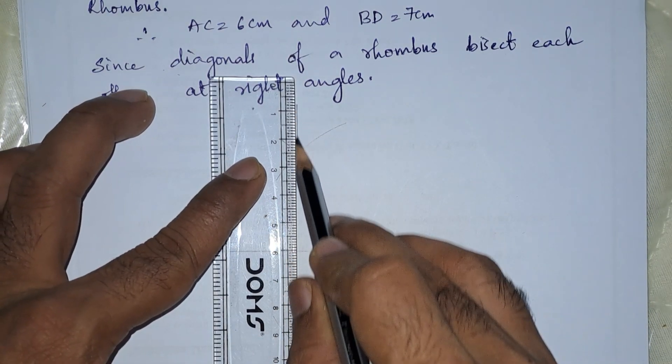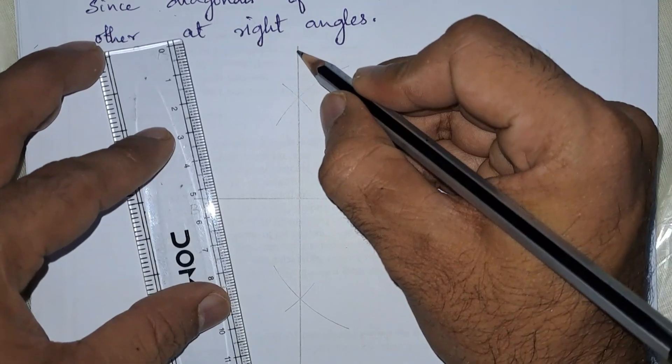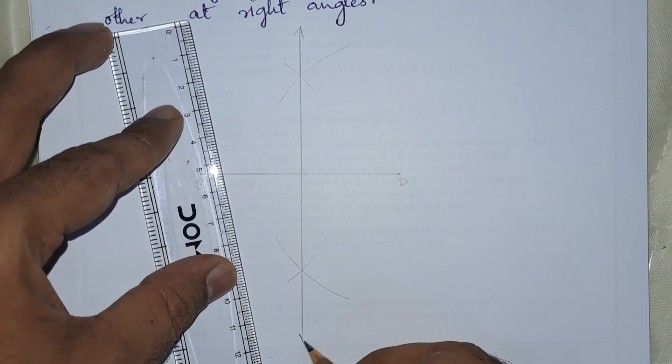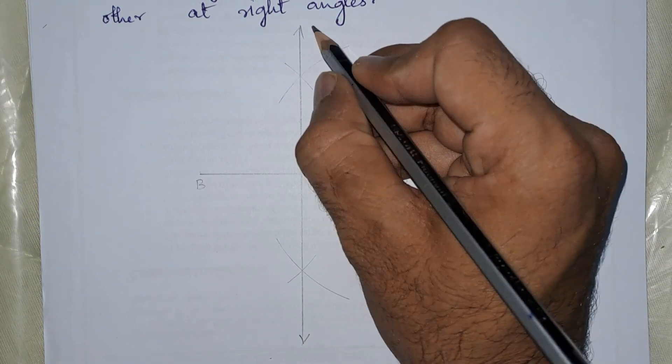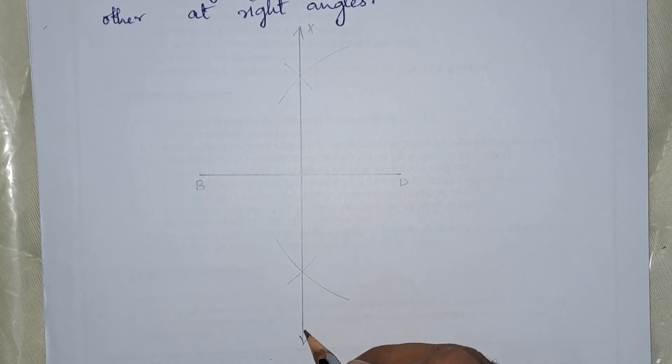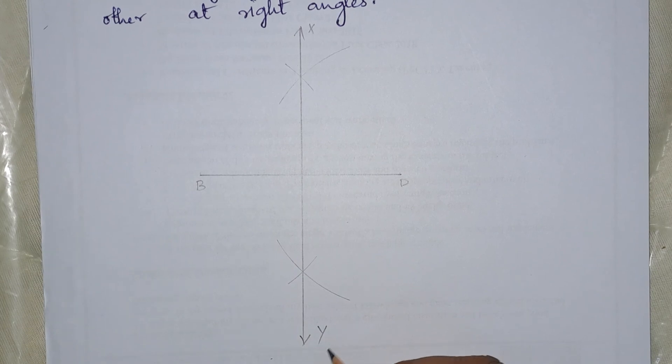So if we join these points, we will get a perpendicular bisector. So let this be X and this be Y.